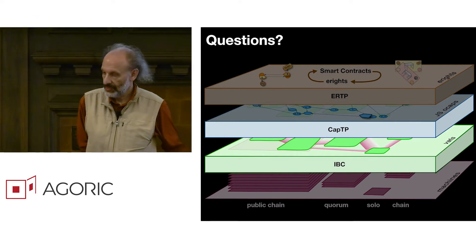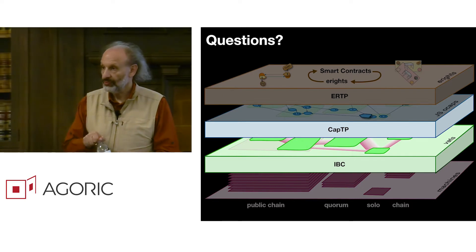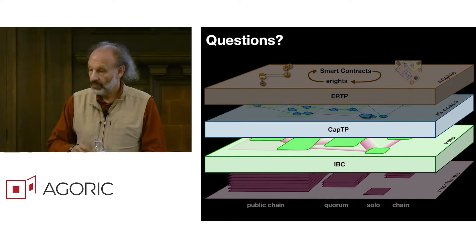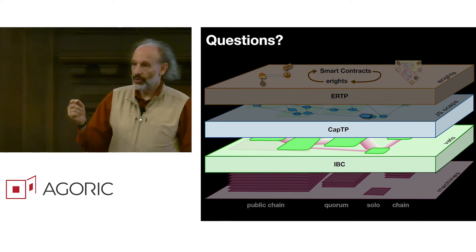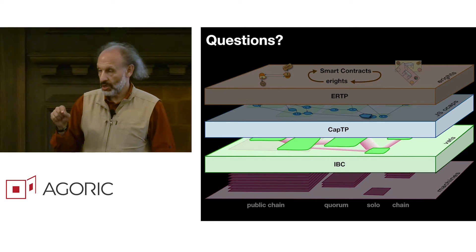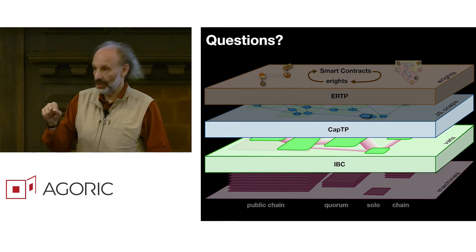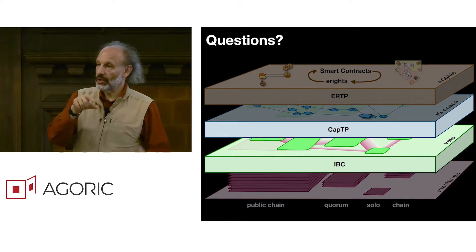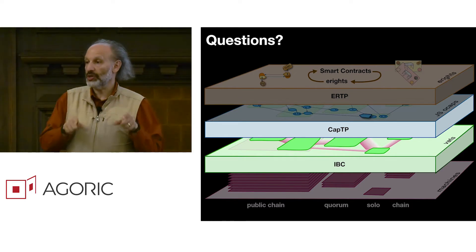So the complexity of swing sets is only introduced in order to facilitate communication between chains? The between chain communication happens by virtue of IBC and CAPTP. Swing set is for communication between multiple vats within one chain.